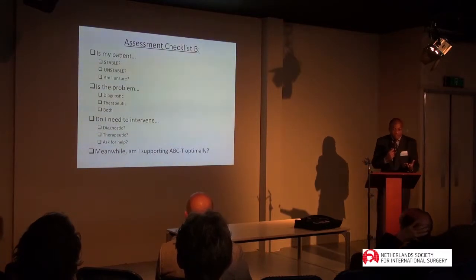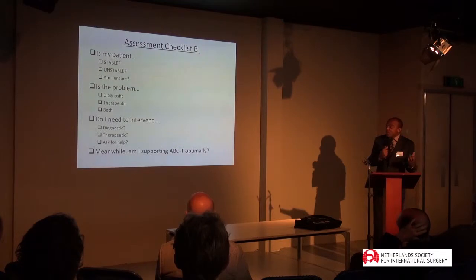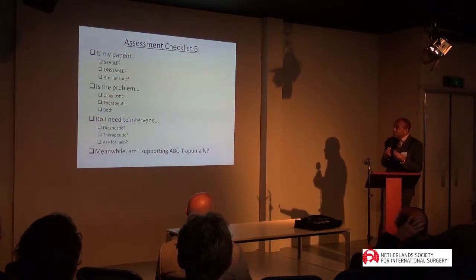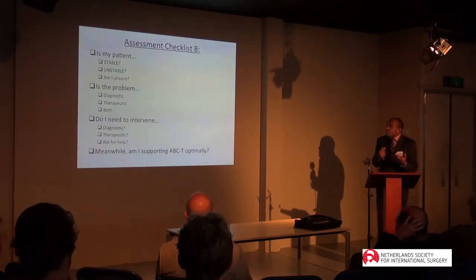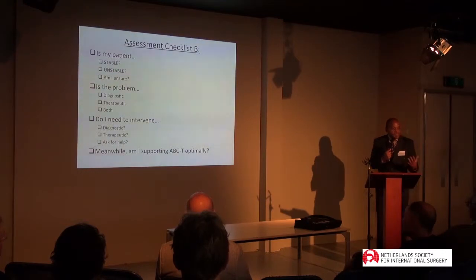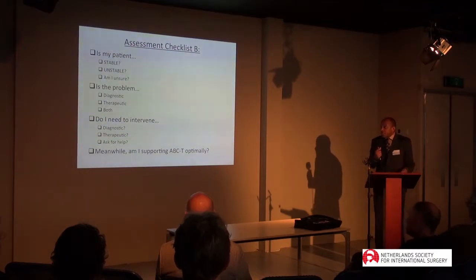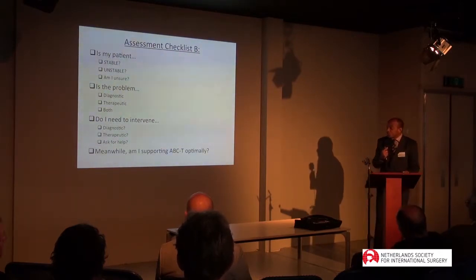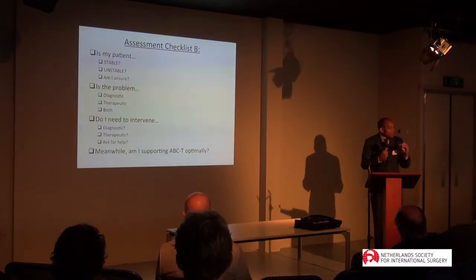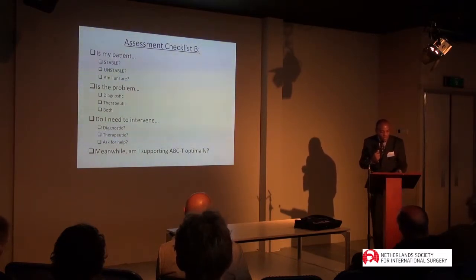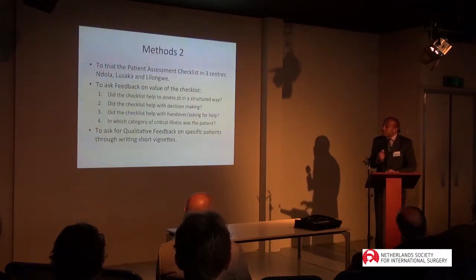The second part of the checklist is to do with decision making. Is my patient stable or unstable? Those are basic questions, and yet they are useful. Or maybe I'm not sure whether the patient is stable or not — if not, where's the problem? Is it that I'm failing to make a diagnosis, or am I limited in terms of therapeutic options, or both? How do I need to intervene — is it diagnostic, is it therapeutic, or should I ask for help? Meanwhile, am I supporting the ABC and tissue optimally to keep the patient alive?